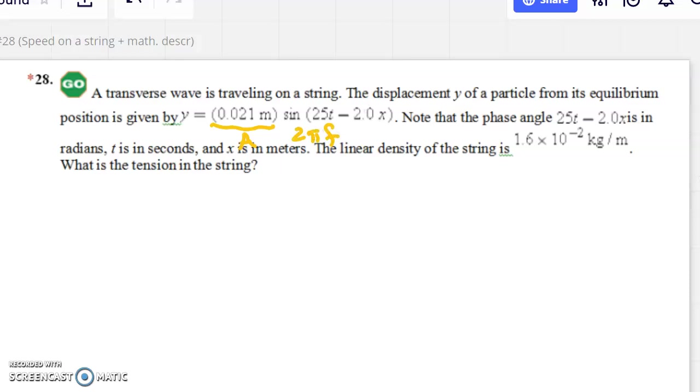And this part that's by the X is the two pi over the wavelength. And so they tell you that this angle is in radians, which is good. That's a stipulation of this equation that you have to have the angle in radians. And they tell you the linear density of the string. Remember, in our last video, we called that mu. And they're asking for the tension in the string.